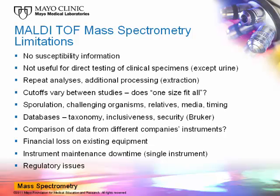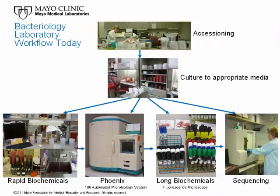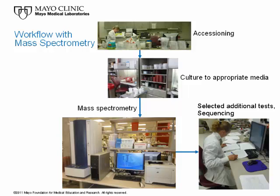The available systems are not approved by the United States Food and Drug Administration. This slide illustrates bacteriology workflow today, including the use of rapid biochemicals, an automated phenotypic identification system, long tube biochemicals, and 16S ribosomal RNA gene sequencing. With MALDI-TOF mass spectrometry, colonies growing on plates can be directly identified without the need for many other identification tools used today.